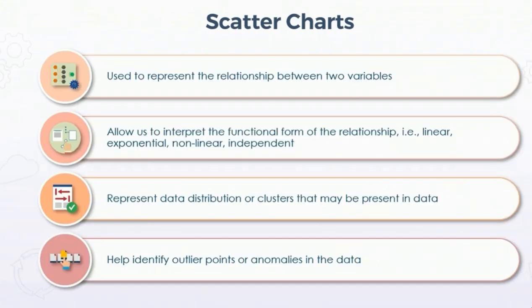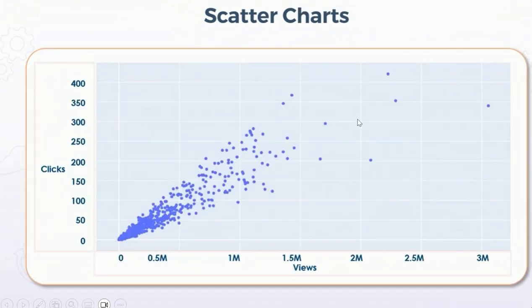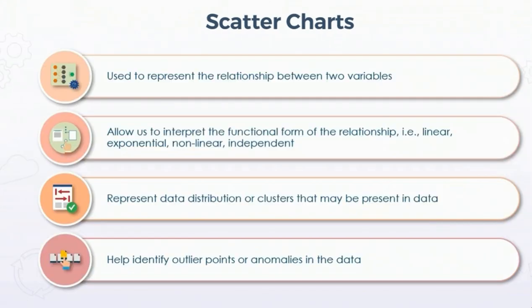Scatter plots are used to represent the relationship between two variables. They also allow us to interpret the function form of the relationship — whether it is linear, exponential, logarithmic, non-linear, or independent. Scatter plots are also useful to represent data distribution or clusters that may be present in the data. You can see where the cluster is represented most, and after that there are only a few points.